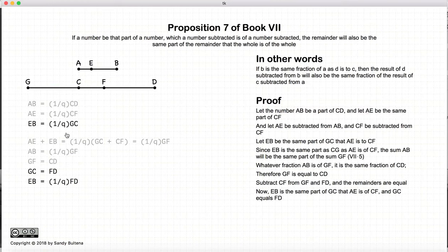Now, to recap, we have that eb is the same fraction of gc that ae is of cf, and gc equals fd. Therefore, eb is the same fraction of fd as ae is of cf,